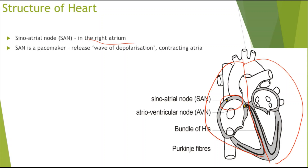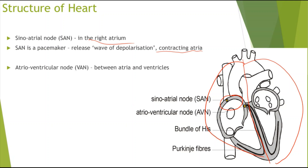The SAN basically sets the pace for the heart to beat. This is done by releasing a wave of depolarization which allows the atria to contract — both the right and the left atrium. We also have the atrioventricular node, the AVN, which is located between the atria and the ventricles.